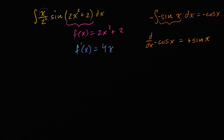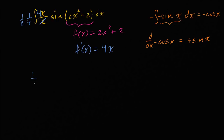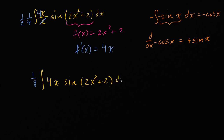This thing right over here isn't exactly four x, but we can do a little rearranging — multiplying and dividing by a constant — so this becomes four x. What if we were to multiply and divide by four? We multiply by four inside, then divide by four and take it out of the integral sign. And even better, let's take the one half out as well. So I can rewrite the original integral as one eighth times the integral of four x times sine of two x squared plus two dx.